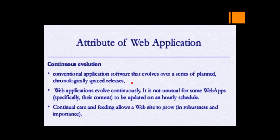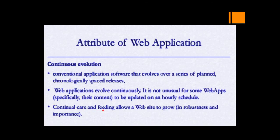The next attribute is continuous evolution. Unlike traditional software that is planned and released on chronologically spaced schedules, web applications evolve continuously — updates may happen even within an hour. Web apps continually evolve based on the necessity of the situation. Because of this nature of continuous evolution, continuous care and feeding is necessary in order to grow the website in a robust manner, by watching what the web app needs, what is being updated, and what feedback is received from end users and customers.